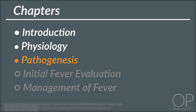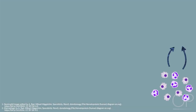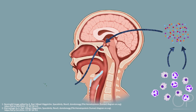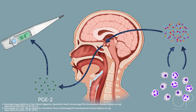Peripheral phagocytes release various cytokines in response to encountered foreign antigens or injury, including IL-1, IL-6, TNF-alpha, and interferon. These cytokines then act on the anterior hypothalamus, resulting in the upregulation of prostaglandins, especially PGE2, which results in an increase in the hypothalamic set point for body temperature.